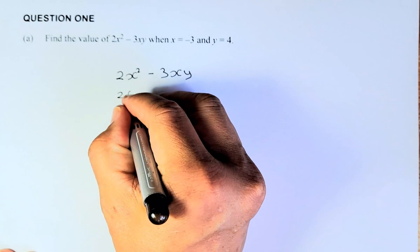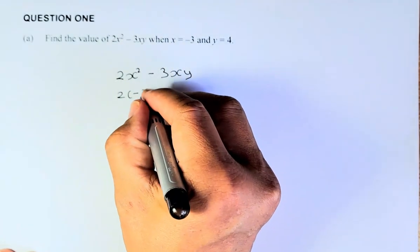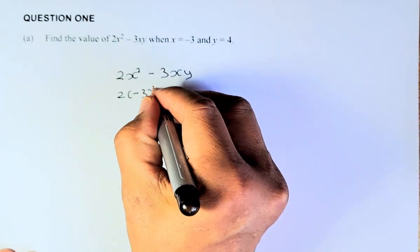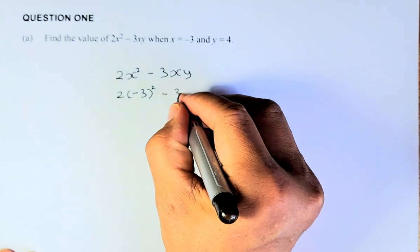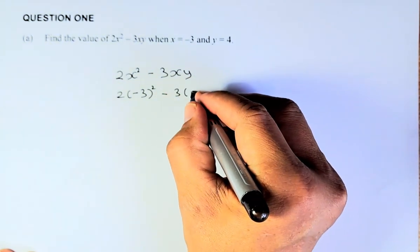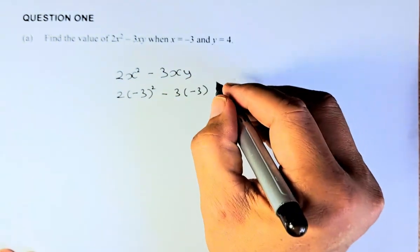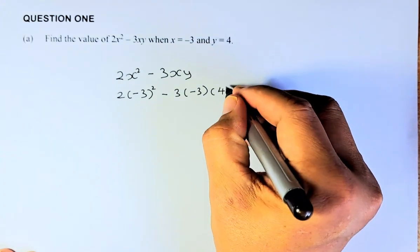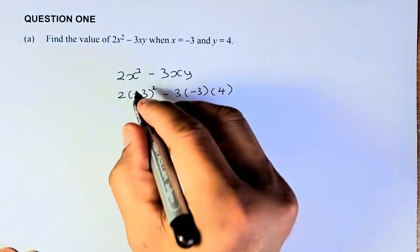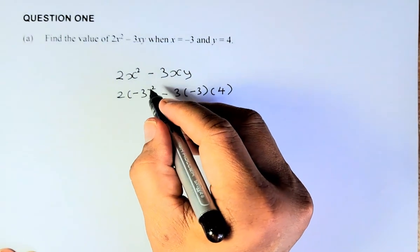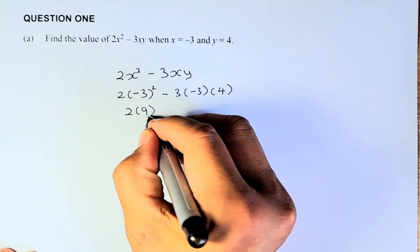So: 2, instead of x squared — make sure you have a bracket — you're going to put minus 3 squared. And minus 3, put a bracket, minus 3. x is replaced by minus 3 and y is replaced by 4. Now be careful: minus 3 is squared, so it's going to be 2 multiplied by 9.